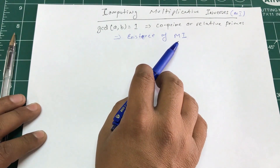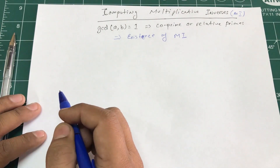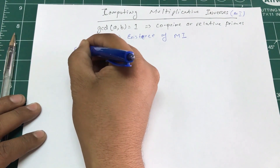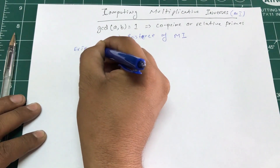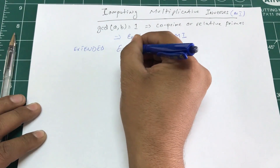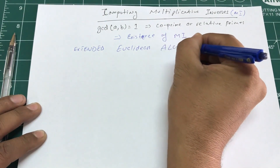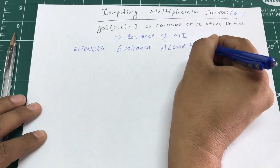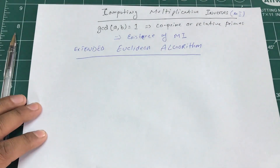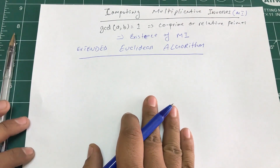Whenever two numbers have a GCD of 1, there is definitely going to be an existence of a multiplicative inverse, and we need to find that out. The way we're going to find this is by using something called the extended version of the Euclidean algorithm — the extended Euclidean algorithm.